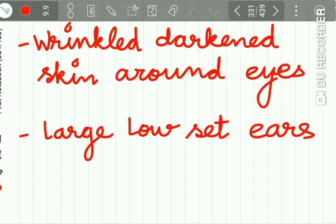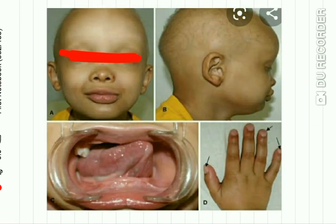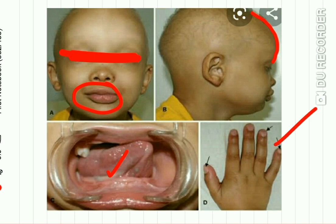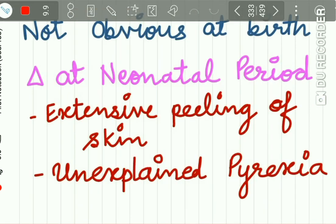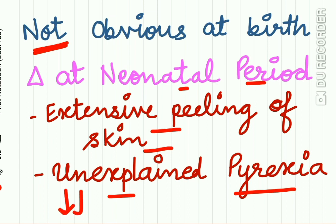There is wrinkling and darkening of the skin around the eyes and large, low-set ears. These features — frontal bossing, protuberant lips, absence of teeth, and nail anomalies — are characteristic. Importantly, these features are not obvious at birth, so diagnosis in the neonatal period is very difficult and can only be made by two features: unexplained pyrexia and extensive peeling of skin. Because sweating is reduced, it is very difficult for these patients to maintain body temperature, resulting in fever and extensive skin peeling.